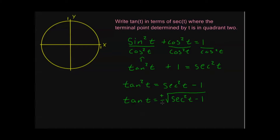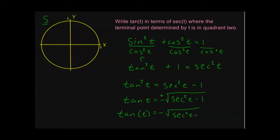If you didn't include that plus or minus, you wouldn't know why the problem specifies the quadrant. Since the terminal point determined by t is in quadrant 2 — and by 'all students take calculus,' tangent is negative in quadrant 2, only sine and cosecant are positive there — tangent of T written in terms of secant is negative square root of secant squared T minus 1. Most students miss this problem because they forget that negative sign.